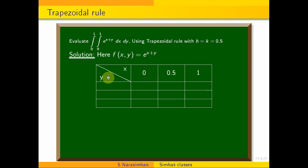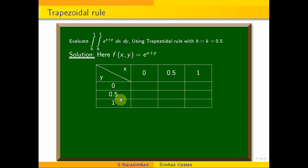Similarly, the y-order lower limit is 0, then 0.5, and k equal to 0.5, so the upper limit is 1. The y values are: 0, 0.5, 1.